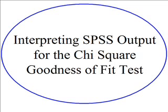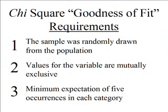Specifically, the possible values for the variable are categorical and cannot be ranked. When using a chi-square goodness-of-fit test, there are some basic requirements we need to meet for our findings to be of value. Number one: the sample had to have been randomly drawn from the population, meaning the sample is representative of the population. That's important if we hope to generalize our results from the sample to the entire population.